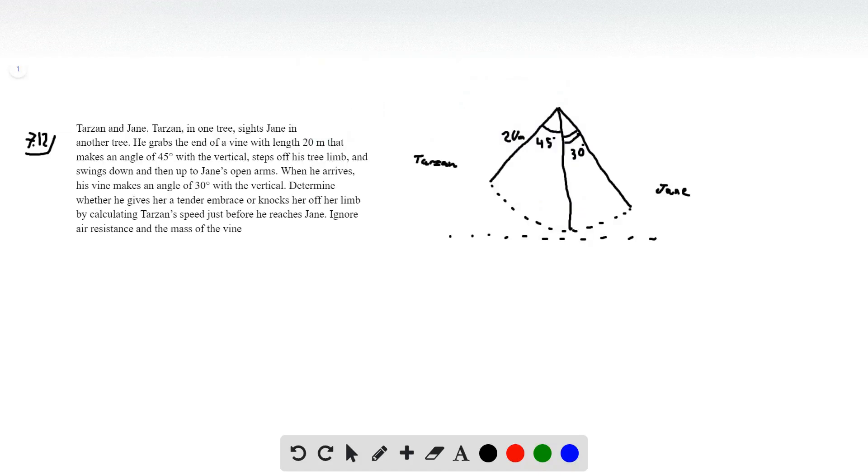Okay, problem 712. We have Tarzan and Jane. Tarzan is in one tree, Jane is in another tree, but he grabs the end of a vine with length 20 meters and makes an angle of 45 degrees with the vertical, steps off his tree limb and swings down and jumps and hops into Jane's open arms.